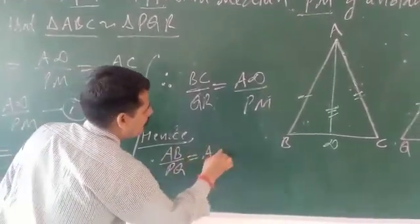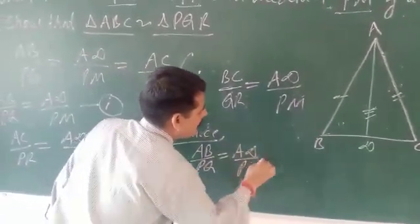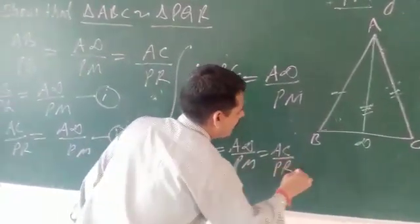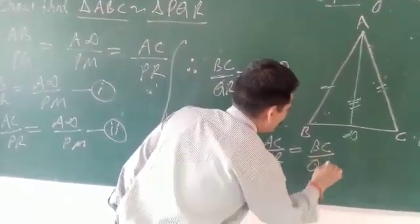will be equal to AB upon PM, will be equal to AC upon PR, will be equal to BC upon QR.